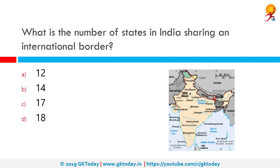What is the number of states in India sharing an international border? The correct answer is 17. Indian states of Sikkim, Arunachal Pradesh, West Bengal and also Jammu and Kashmir share boundary with three neighboring countries.